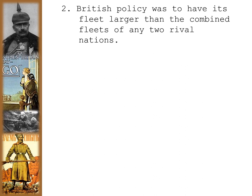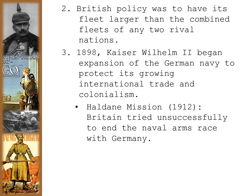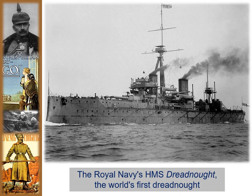The British policy was to have its fleet larger than the combined fleets of any two rival nations. In 1898, Kaiser Wilhelm II began expansion of the German Navy to protect growing international trade and colonialism. The Haldane Mission of 1912 was where Britain tried unsuccessfully to end the naval arms race with Germany, as Britain could no longer afford a fleet double the size of Germany's. By World War I, both Britain and Germany possessed dreadnoughts — new super battleships with awesome firing range and power.